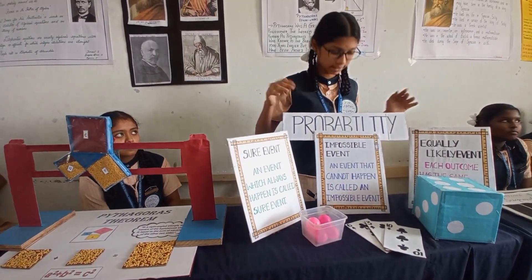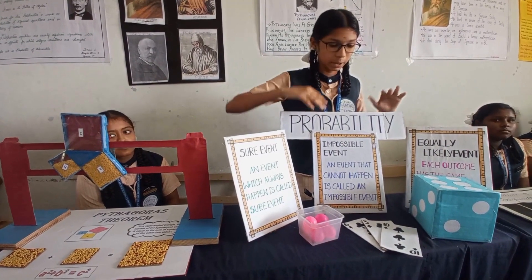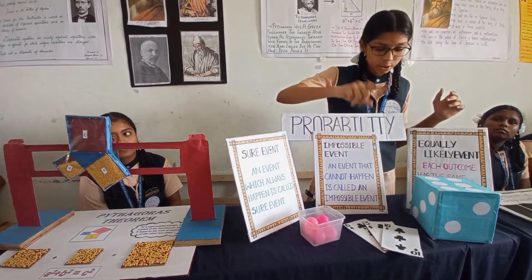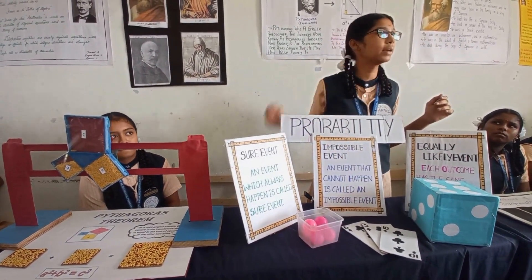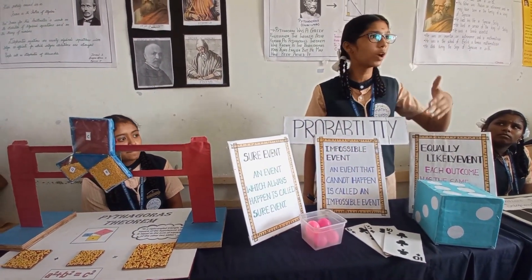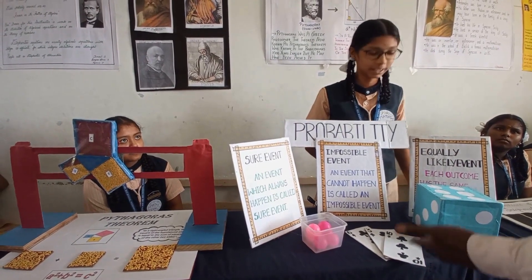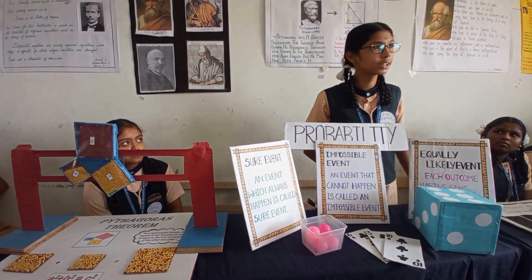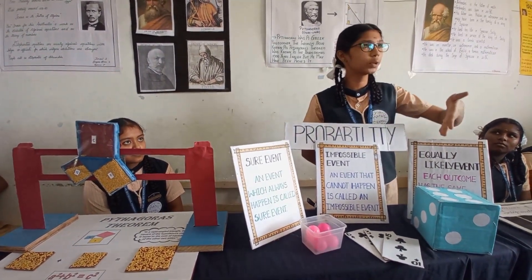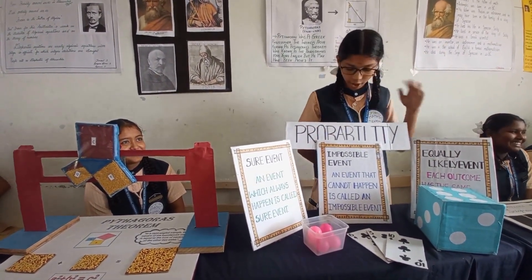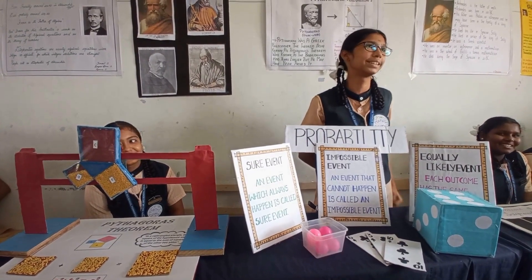Impossible: I have three club cards here. I want you to pick a diamond card. Is it possible to pick a diamond card? There is no diamond card here — it's impossible to pick a diamond card. That's why it is called impossible.